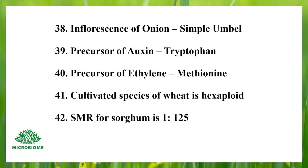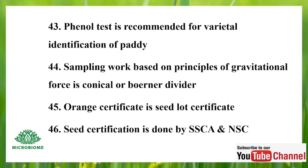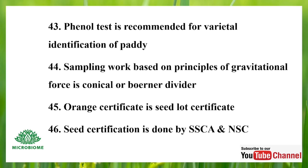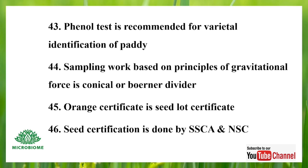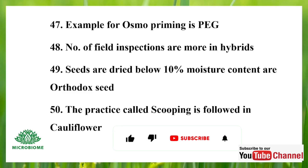The inflorescence of onion is a simple umbel. The precursor of auxin is tryptophan. The precursor of ethylene is methionine. The cultivated species of wheat is hexaploid. The seed-to-male ratio (SMR) for sorghum is 1:125. The phenol test is recommended for varietal identification of paddy. Sampling work based on the principle of gravitational force uses a conical or boerner divider. Orange certification refers to the seed lot certificate. Seed certification is done by State Seed Certification Agencies (SSCA) and NSC. An example of osmo-priming is PEG. The number of field inspections is more in hybrids. Seeds dried below 10% moisture content are called orthodox seeds. The practice called scooping is followed in cauliflower.